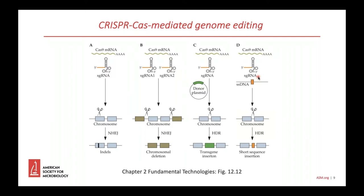There are several other types of CRISPR-Cas systems from other bacteria with different activities that have also been harnessed for genome editing. Cas9 has also been genetically modified and in some cases fused to other proteins — for example, to activate or repress expression without cleaving target genes, or to nick only one DNA strand and make a single base change. The latter are known as base editors.